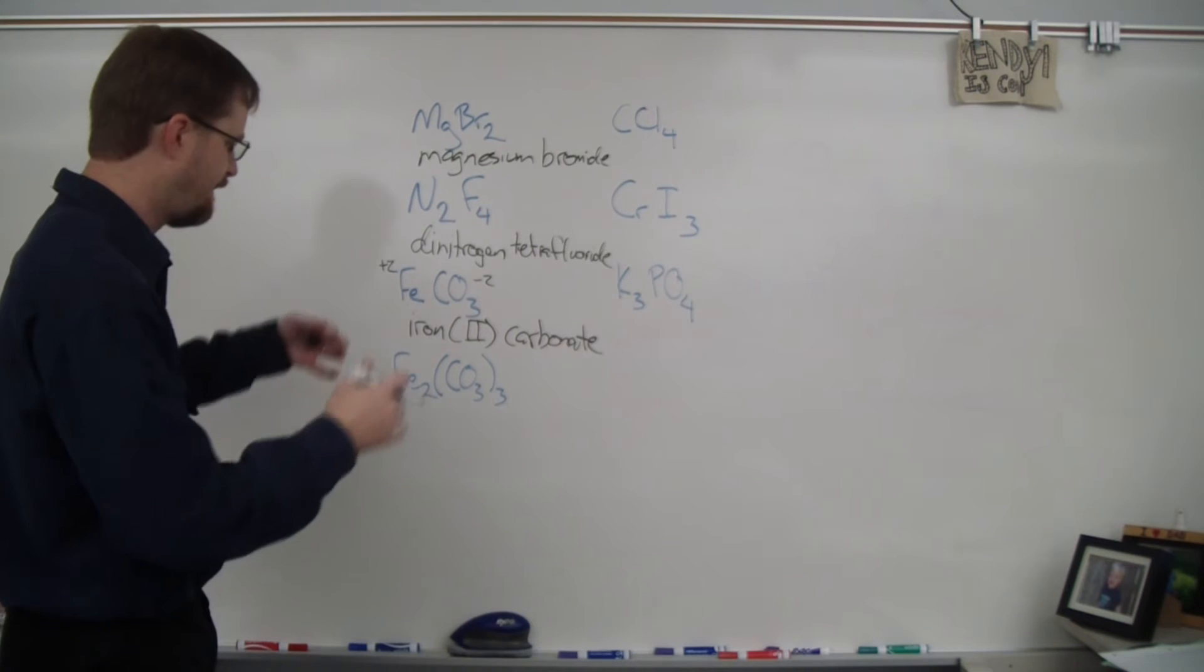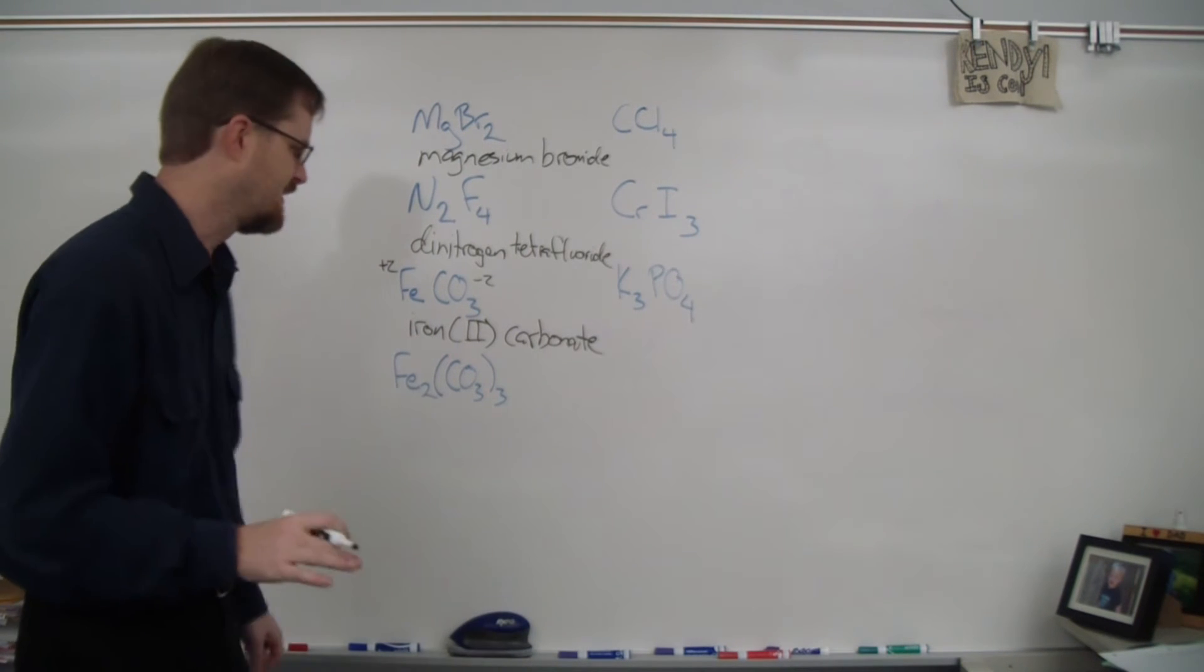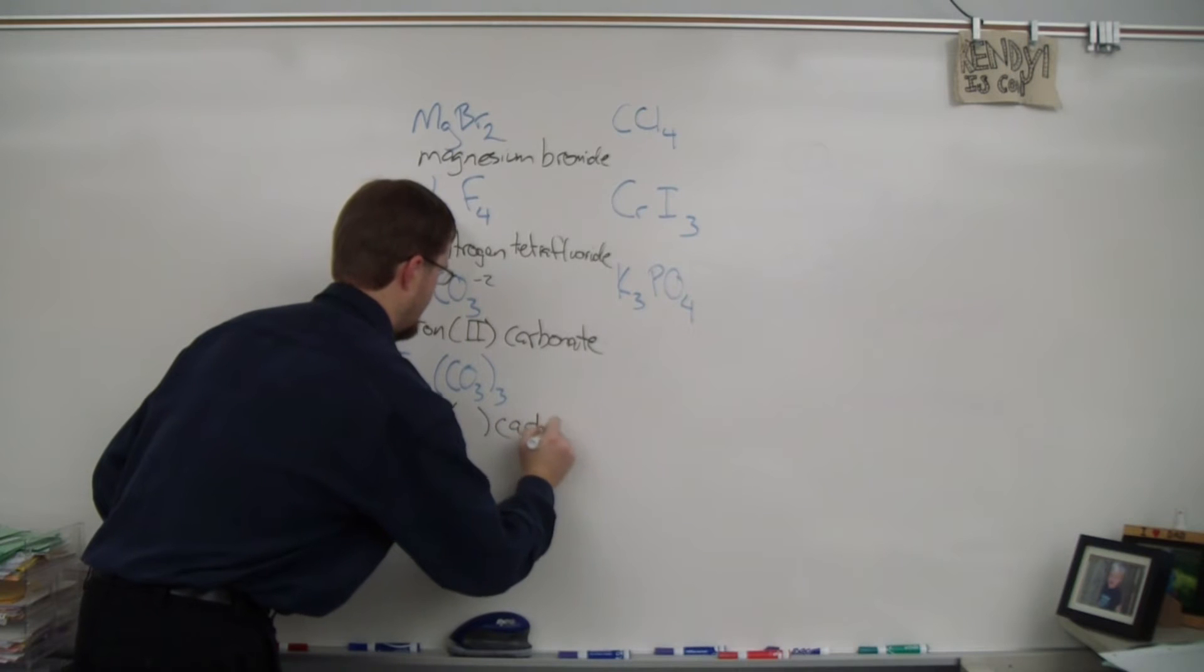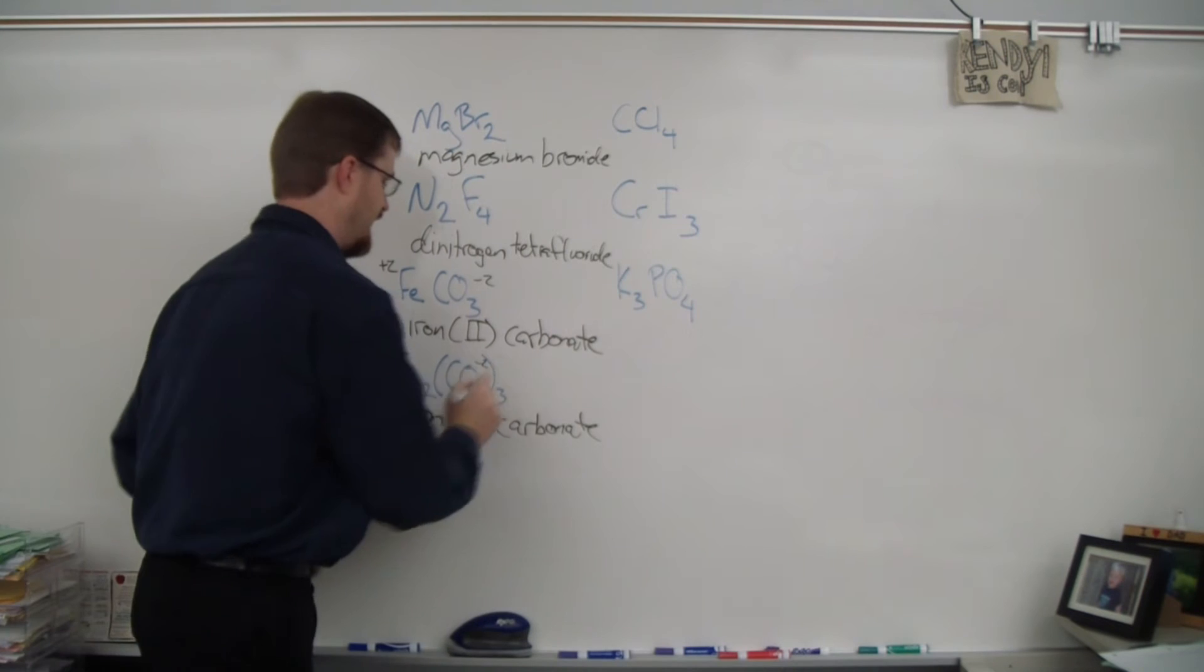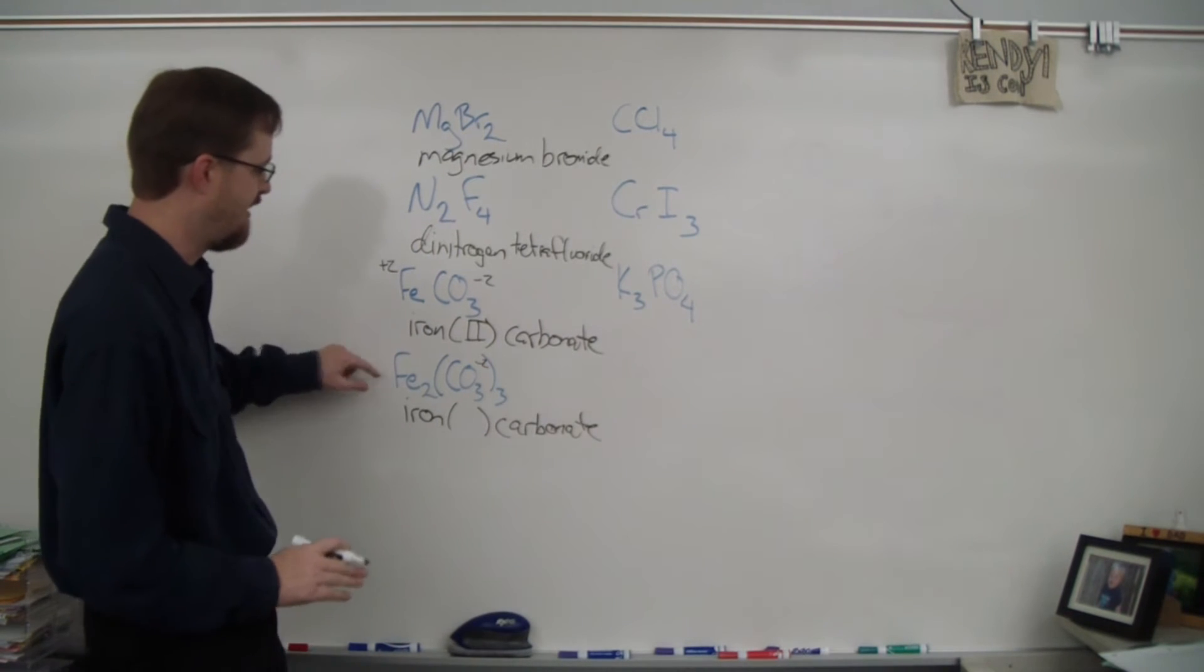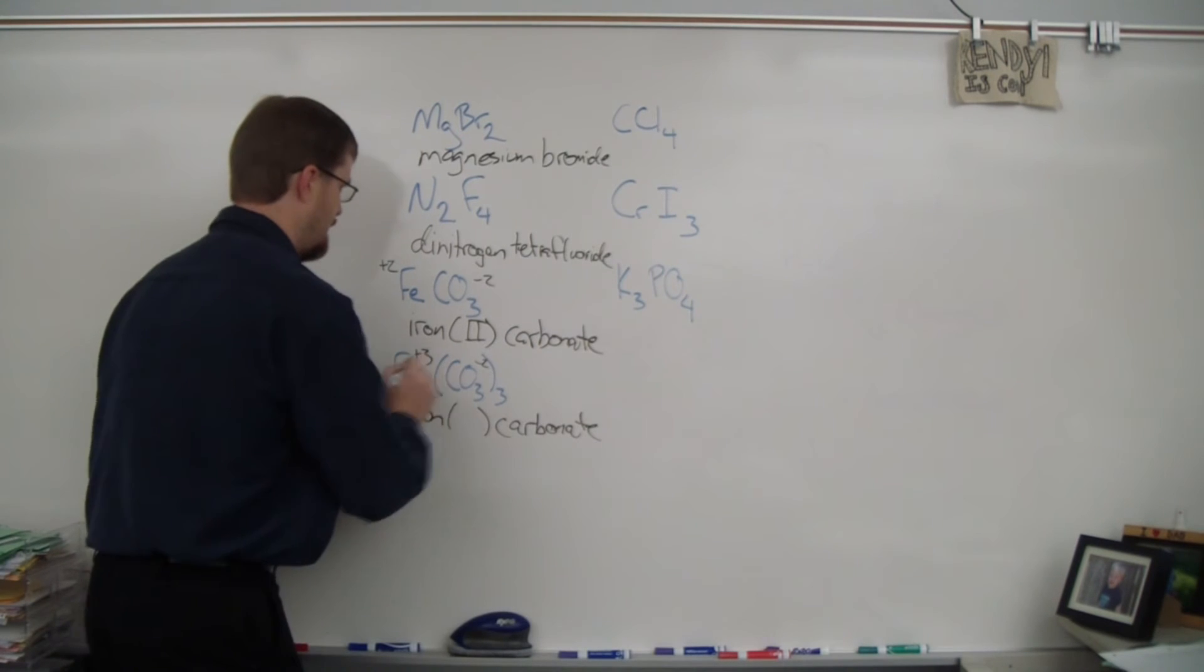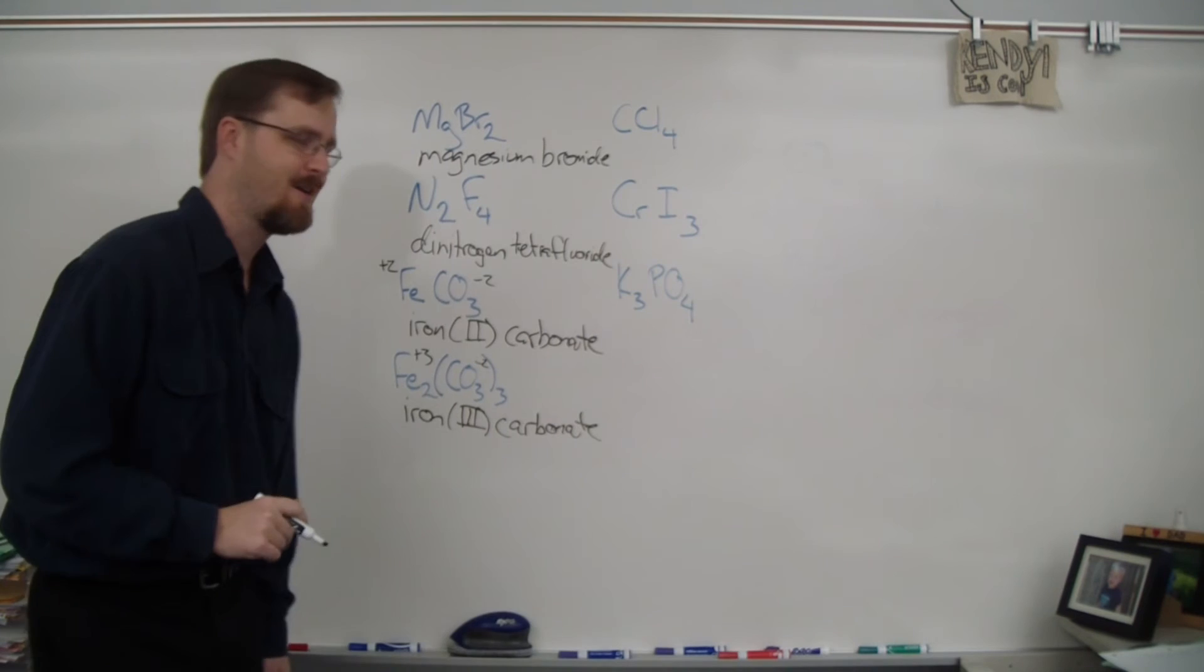Alright, next one. Very similar elements here. But we got different subscripts, so something different is going on here. Alright, so it's still iron, right? Iron something carbonate. But this time, since carbonate here is negative 2, and there's 3 of them, so that makes a charge of negative 6. So in order to balance that out, iron here must be positive 6. But since there are 2 of them, 6 divided by 2 is positive 3. This is iron III carbonate.